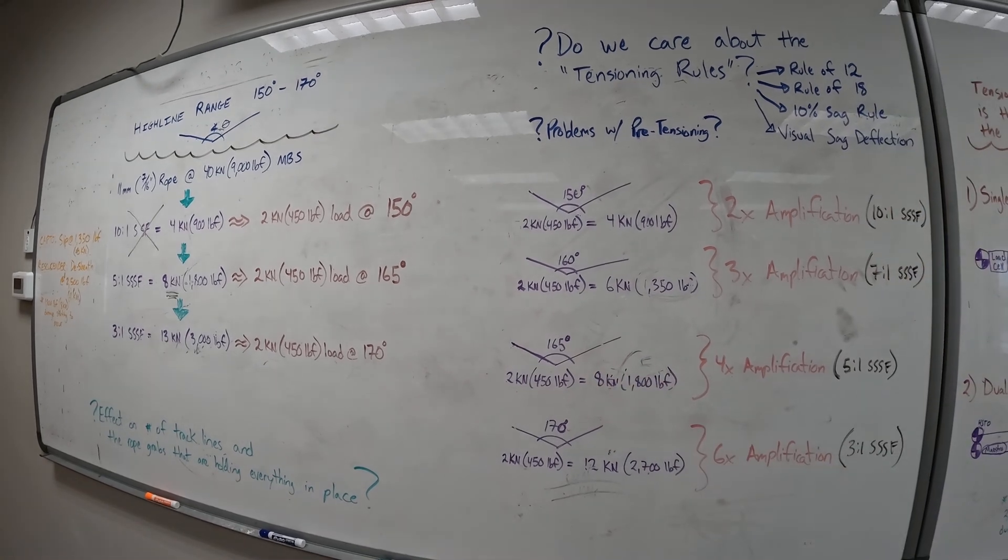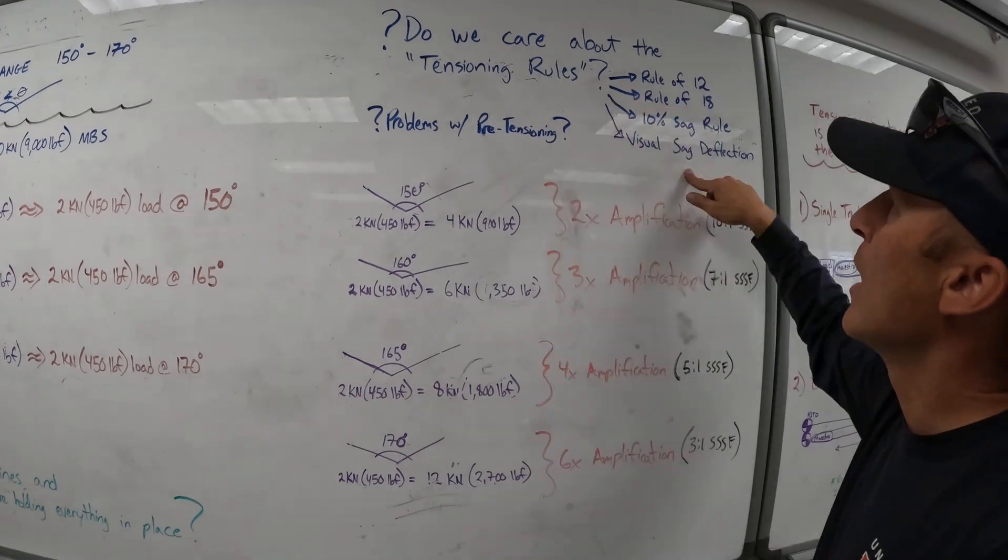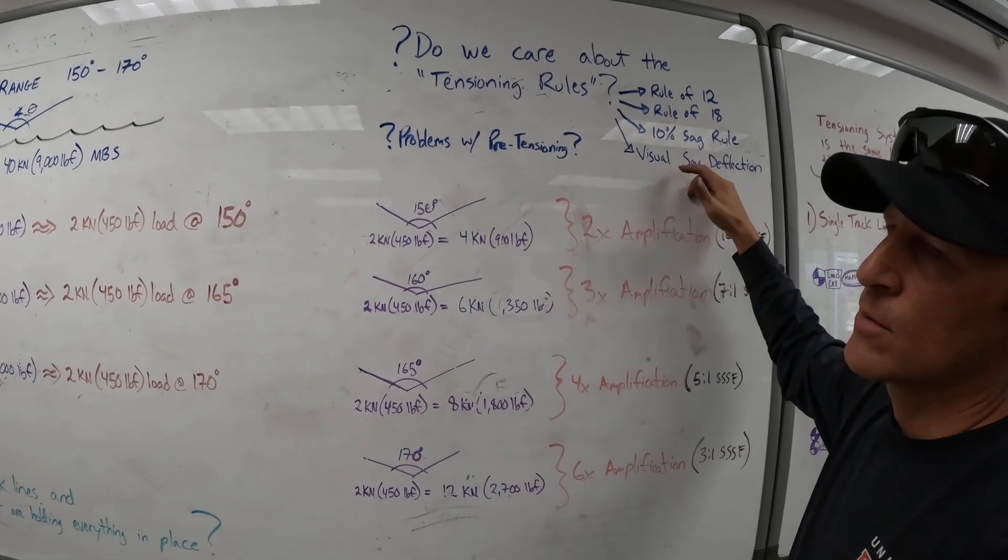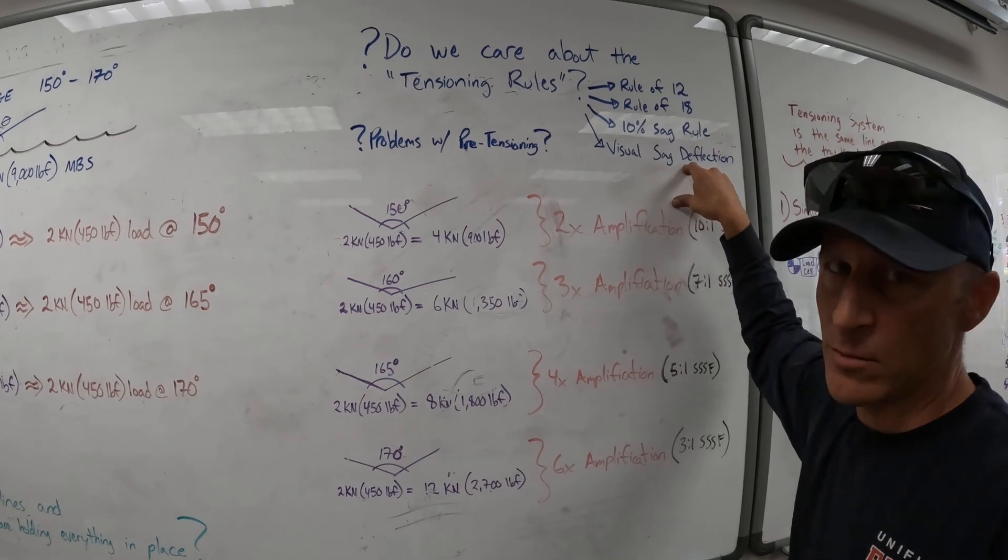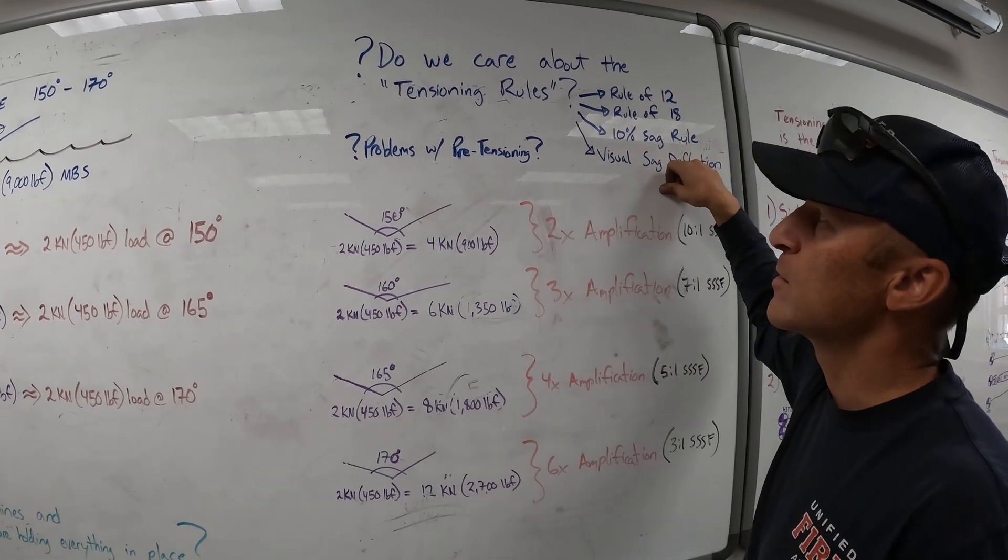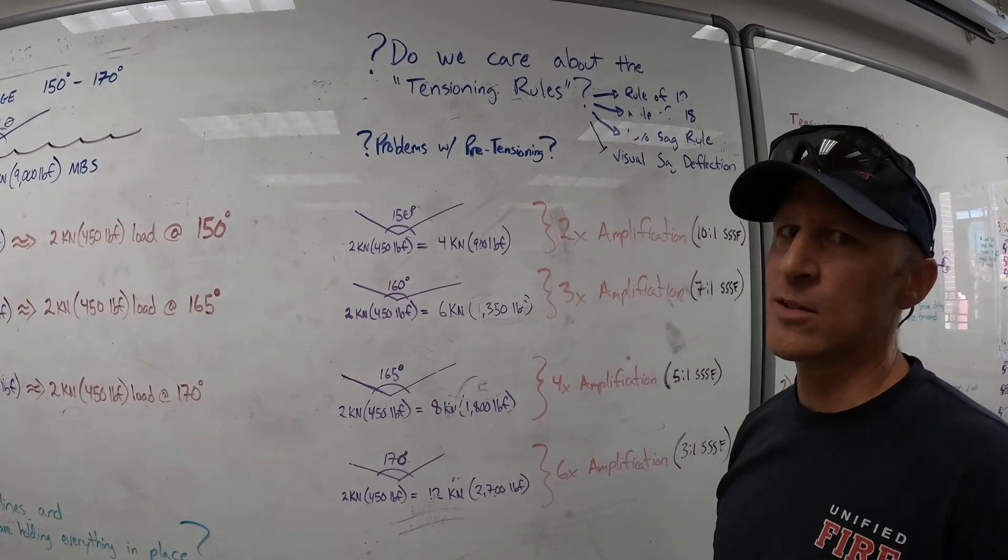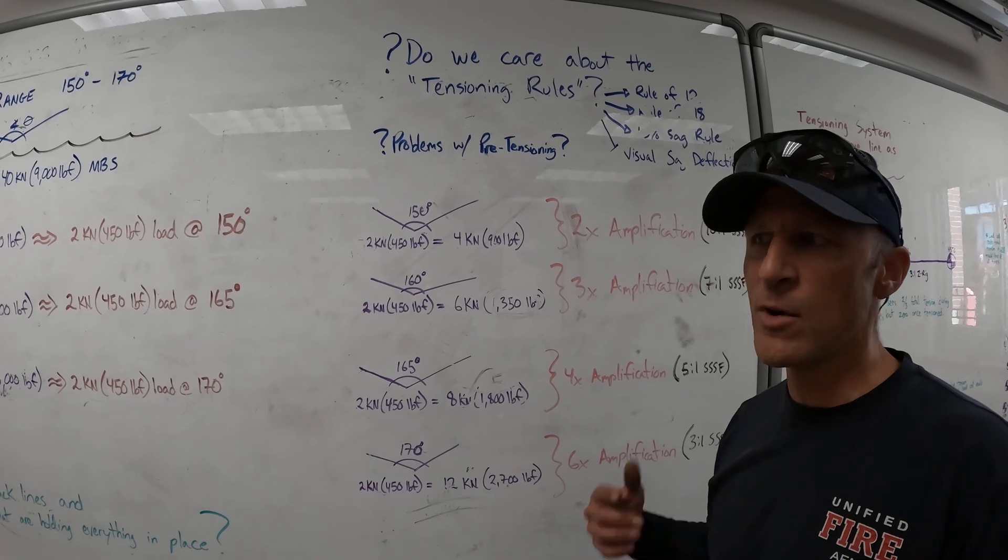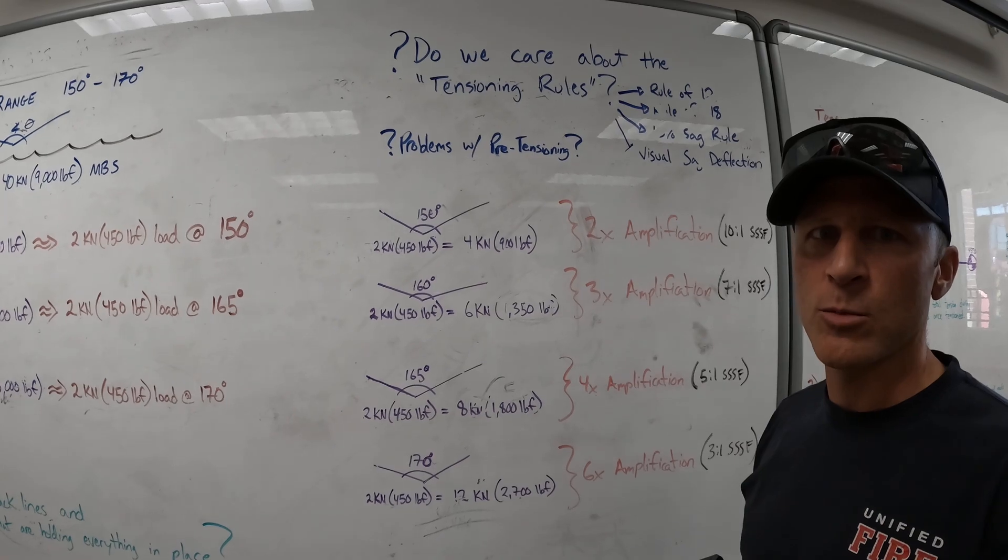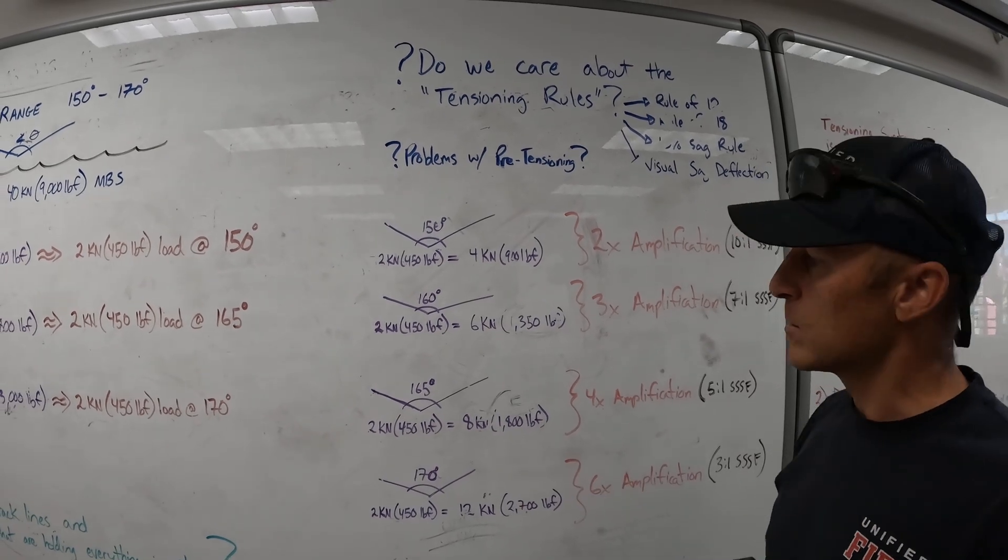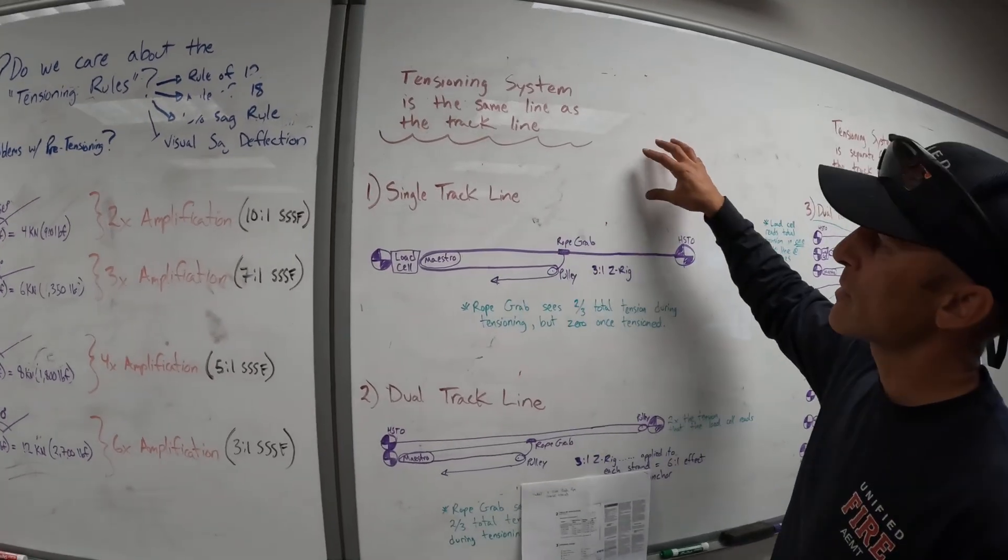Do we care about the tensioning rules, and this applies if you don't have a load cell. Yeah, all these rules: rule of 12, rule of 18, the 10% sag rule, visual sag deflection. Really hard to get in real life. Just get yourself a load cell and eliminate all that and just stick to watching your numbers on your load cell based off of the strength of your rope and your safety factors, and then knowing what rope grabs are going to be appropriate for that sort of system. Moving on, let's go take a look at how we actually tension high lines.